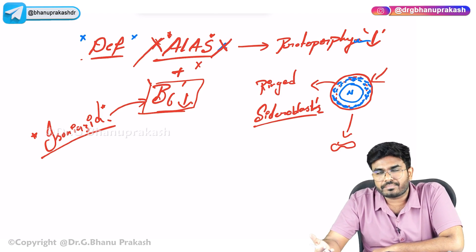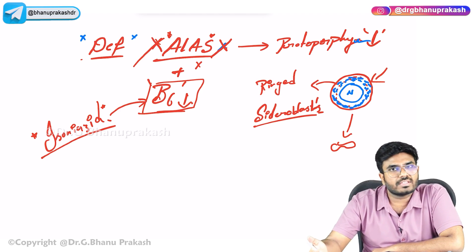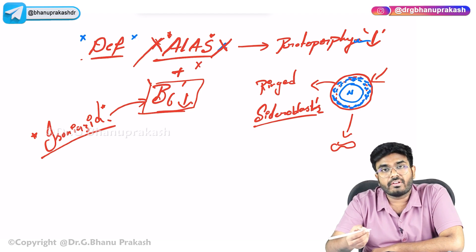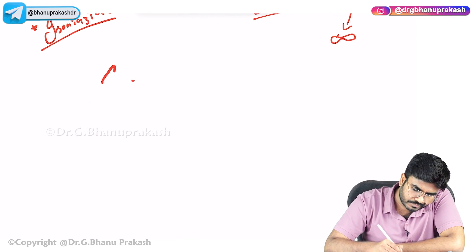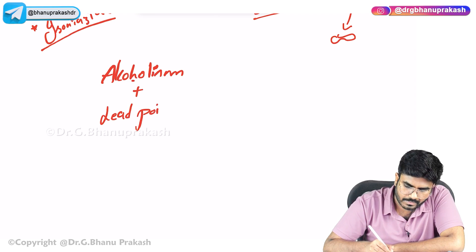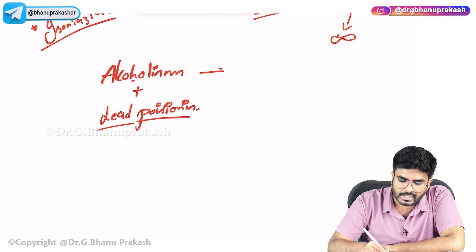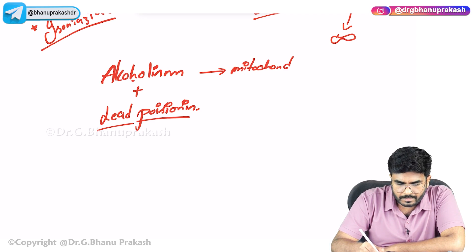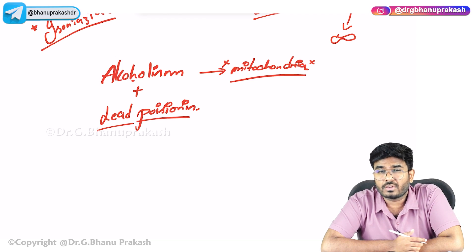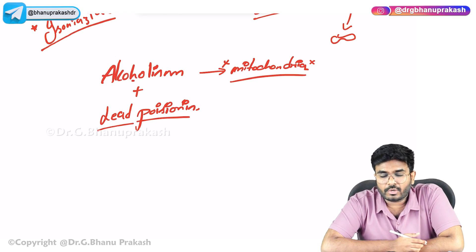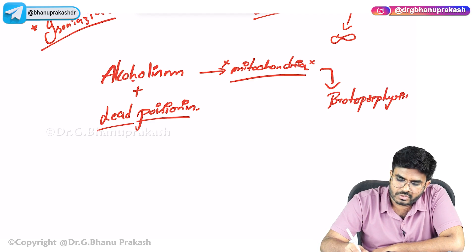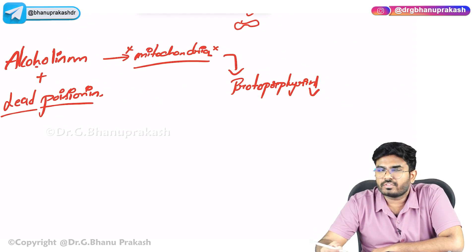Other causes of sideroblastic anemia include alcoholism and lead poisoning. Alcoholism directly targets and damages the mitochondria. If mitochondria are damaged, protoporphyrin production (which occurs in the mitochondria) is impaired. No protoporphyrin → no heme → no hemoglobin → anemia.